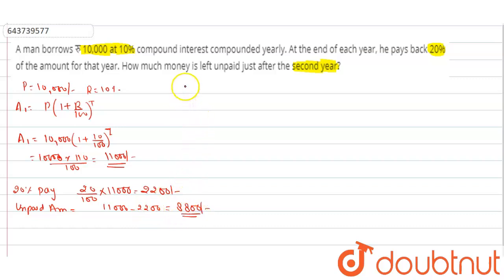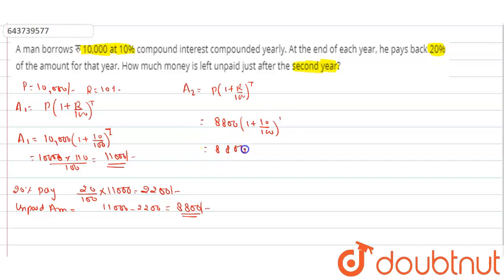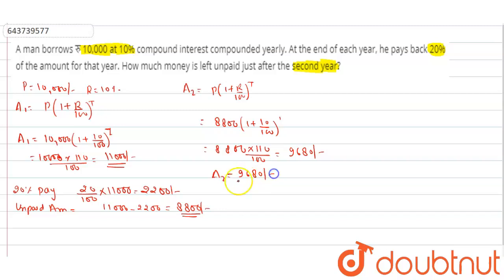For the second year, amount = P(1 + r/100)^t, where P = 8,800. So 8,800 × (1 + 10/100)^1 = 8,800 × 110/100 = 9,680 rupees. This is the amount after the second year.